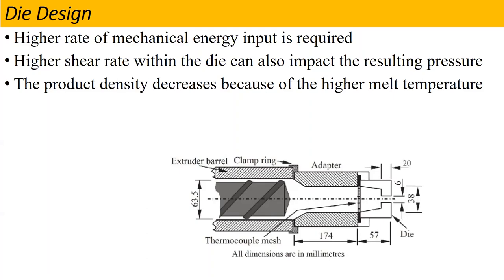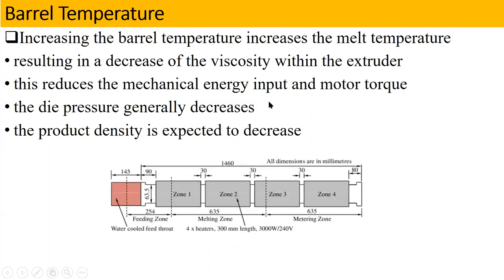Then we learned about the barrel temperature, which was our next characteristic. It also affects our extrusion process. When the barrel temperature increases, the melting zone temperature also increases. What happens? The viscosity of the product is reduced, mechanical energy will also be reduced, the die pressure will also be reduced, and the product density will also be reduced.